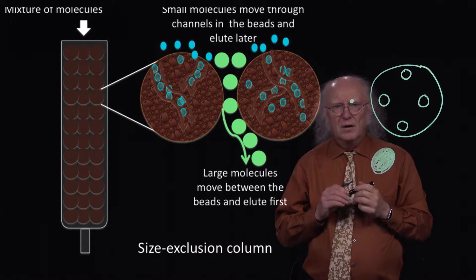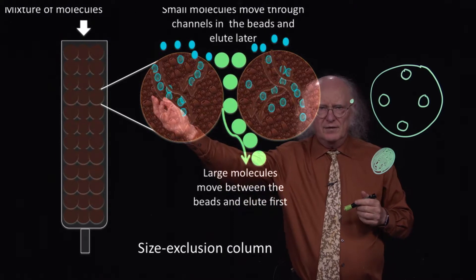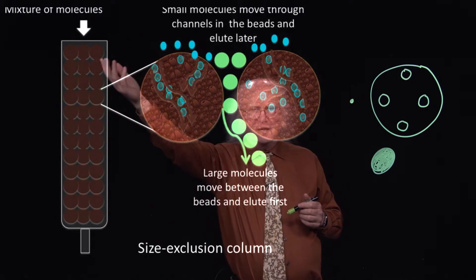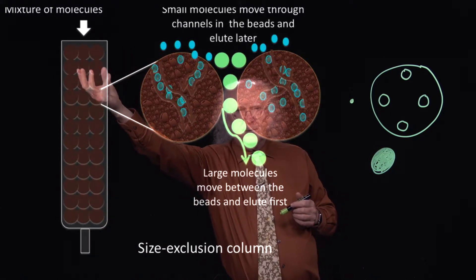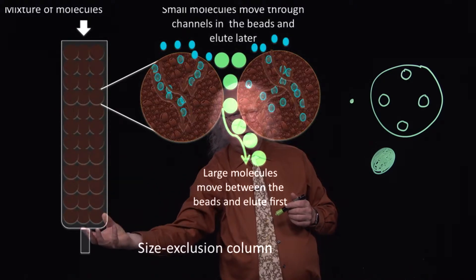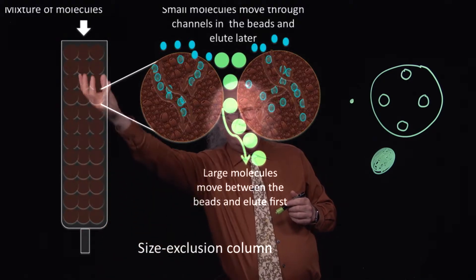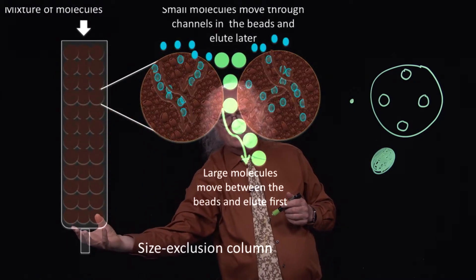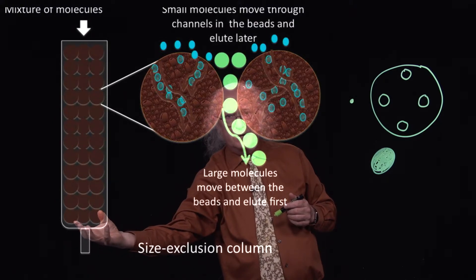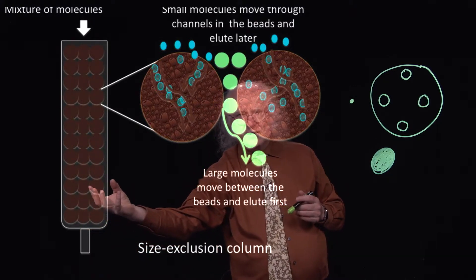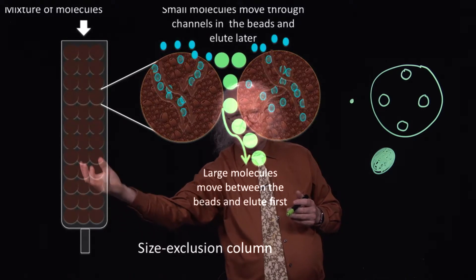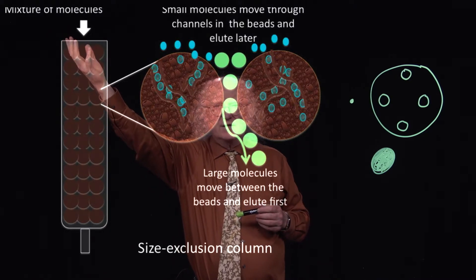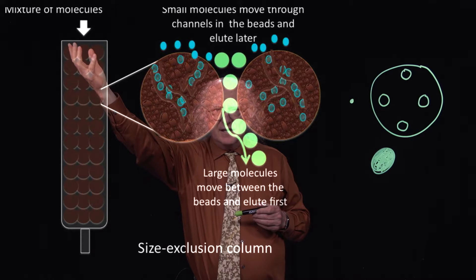Why do I care about that? I have a whole column of these beads, and there are thousands and thousands of them within that column. Flowing through this column is a buffer that goes from top to bottom, moving between the beads and through the beads. That's an important consideration in molecular exclusion chromatography. When I have a mixture of molecules — let's say big and small — that I want to separate by this technique, and I apply these molecules to the top of this column, they will interact with the beads in different ways.